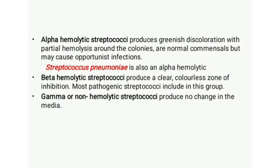These groups are known as Lancefield groups and are named in alphabetical order A to V, without I and J. Alpha hemolytic streptococci produce greenish discoloration with partial hemolysis with indefinite margin, and are also known as viridans streptococci. They are normal commensals in the throat but may cause opportunistic infection rarely.